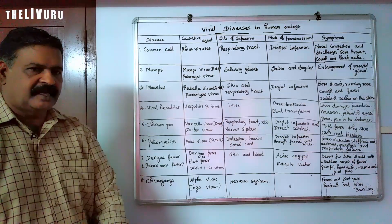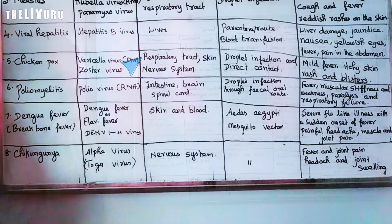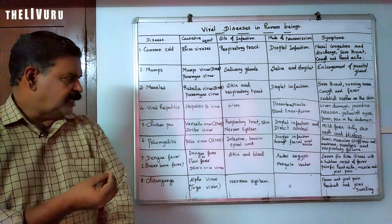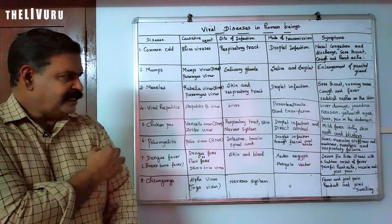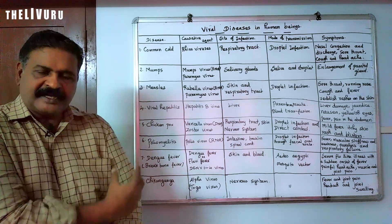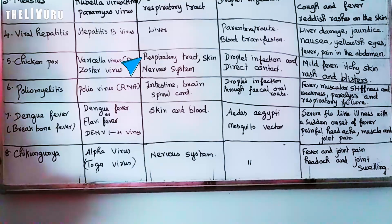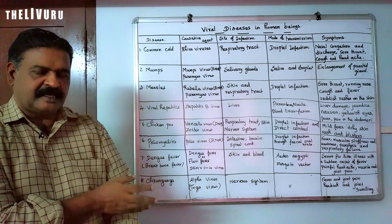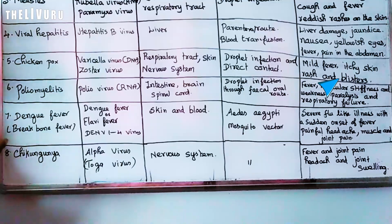The next disease is chickenpox. It is caused by a DNA virus called varicella virus, otherwise known as varicella-zoster virus. It affects the respiratory system, skin, and nervous system. Transmission is by droplet infection and direct contact.